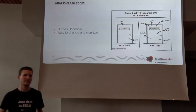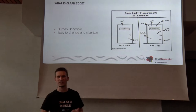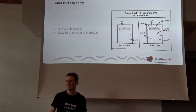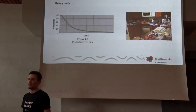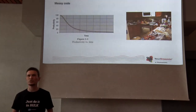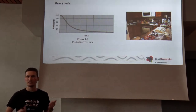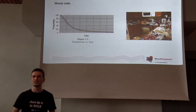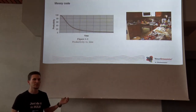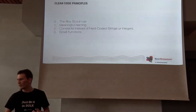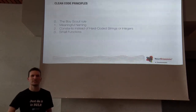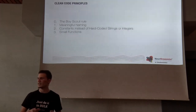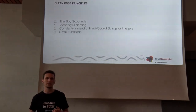So what is clean code? It's the one that is easier to read, understand, and change by human beings. What happens if you don't have clean code? It simply takes more time to read the code, understand it, and change it — like in a cluttered kitchen, it will take more time to cook breakfast. So here come the principles: the Boy Scout rule, meaningful naming, using constants instead of hard-coded strings or integers, and small functions.